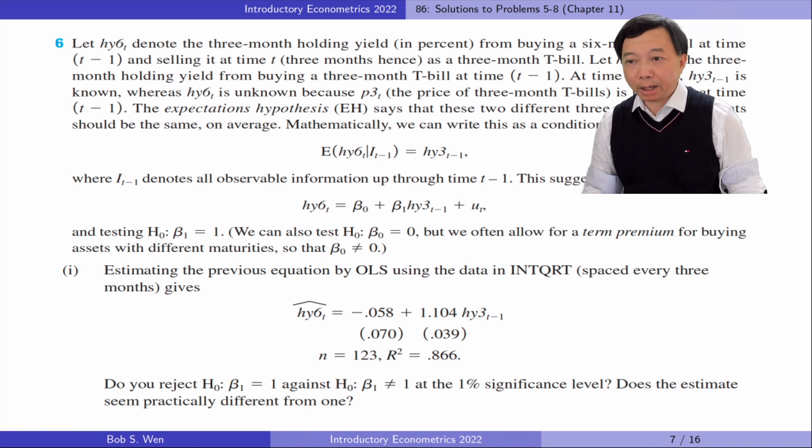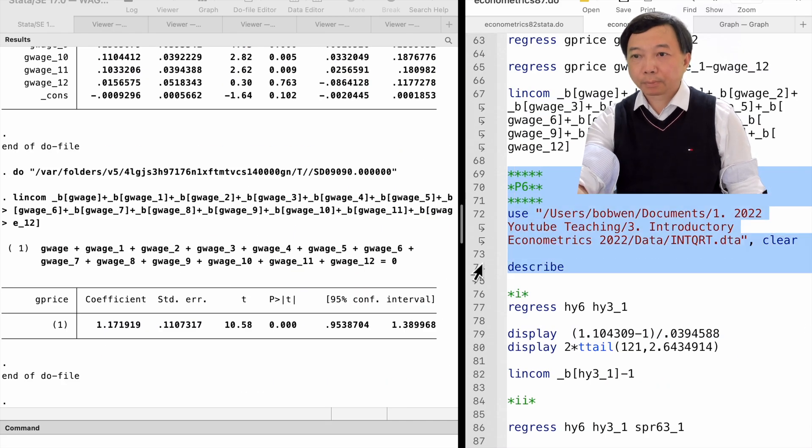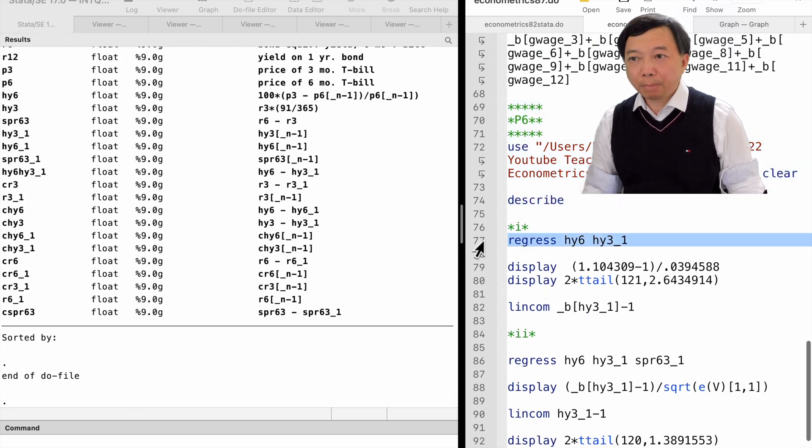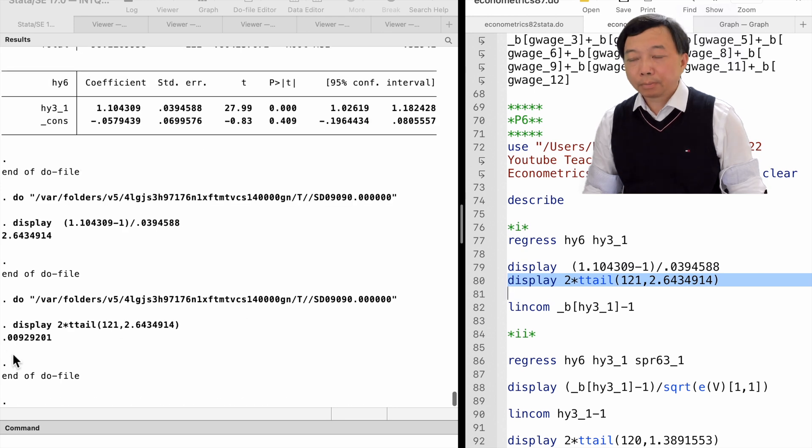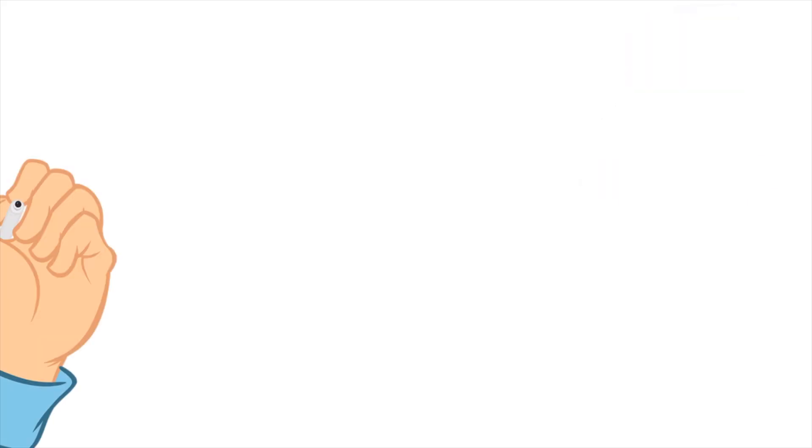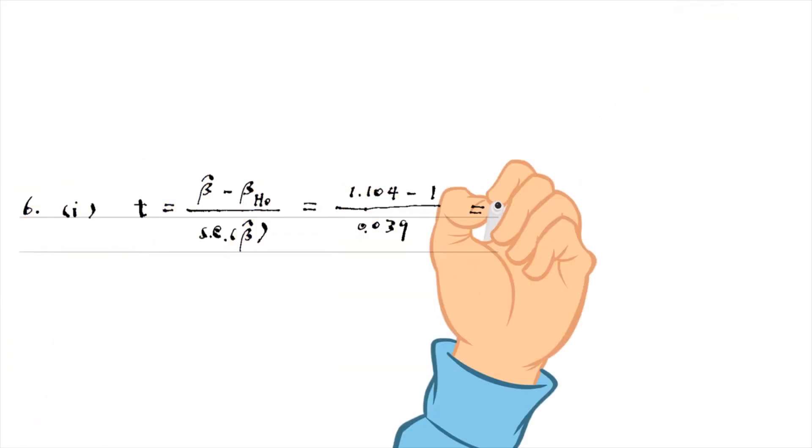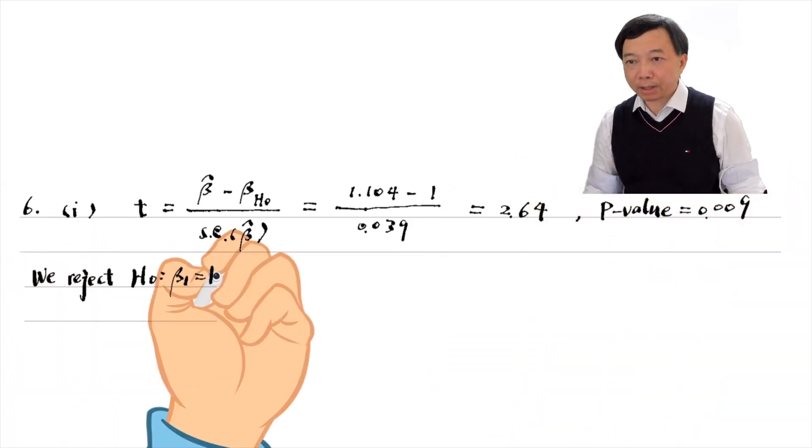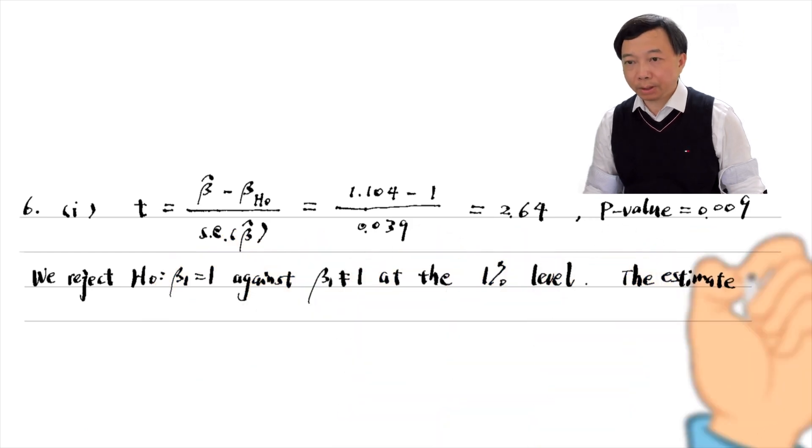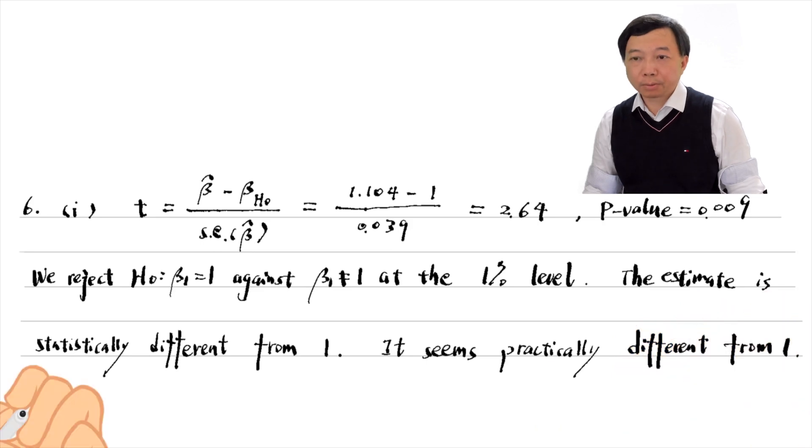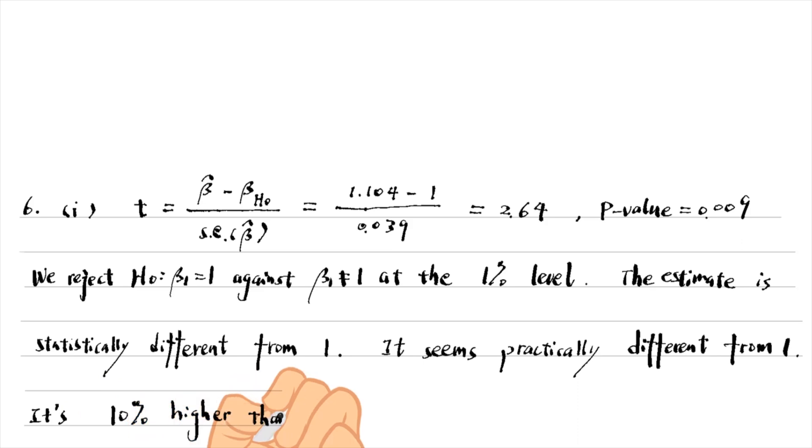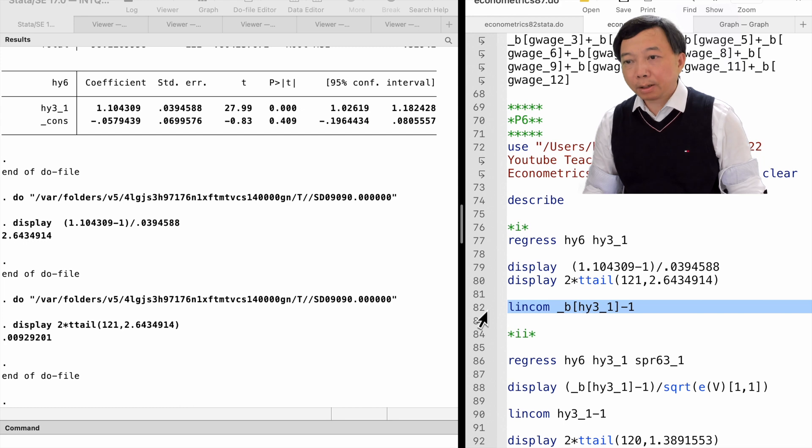In part 1, the estimated equation by OLS is as follows. Do you reject the null hypothesis at the 1% significance level? Does the estimate seem practically different from 1? The t-statistic equals the estimate minus the hypothesis value and then divided by the standard error. It is 2.64 and its two-sided p-value is 0.009. We reject the null hypothesis at the 1% level. The estimate is statistically different from 1. It seems practically different from 1 because it is 10% higher than 1. We can also use the lincom command in Stata to find the answer.